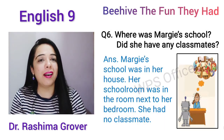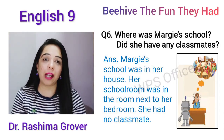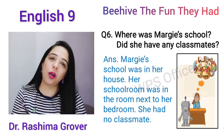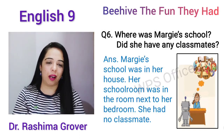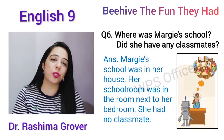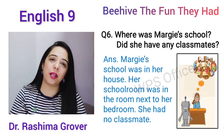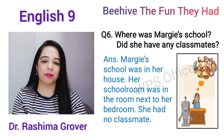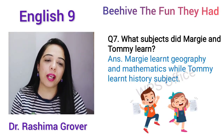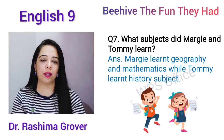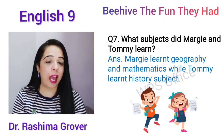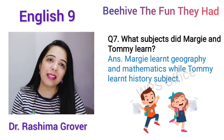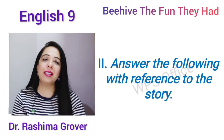Where was Margi's school? Did she have any classmates? Margi's school was in her house — uske ghar pe tha. Her classroom was in the room next to her bedroom. She had no classmate — uska koi bhi classmate nahi tha. What subjects did Margi and Tommy learn? Margi learnt geography and mathematics, while Tommy learnt history.